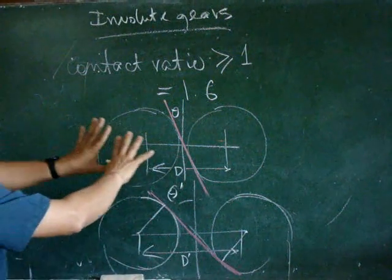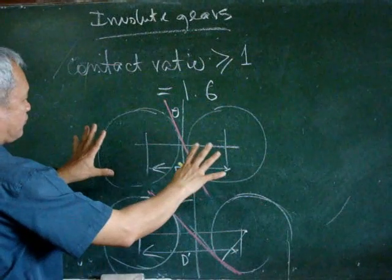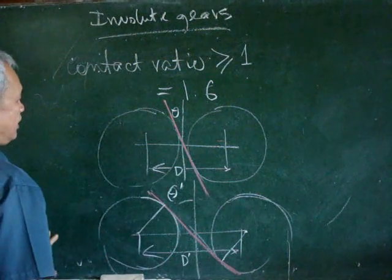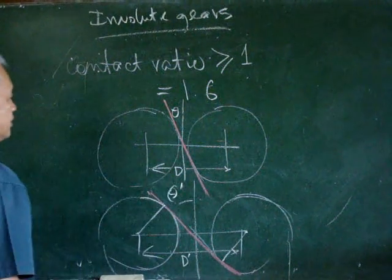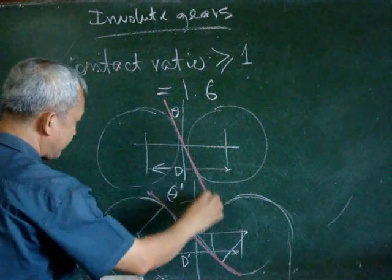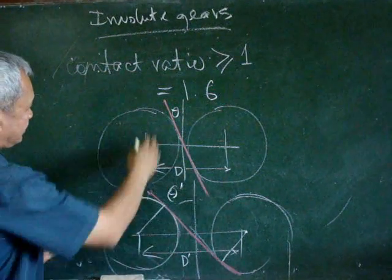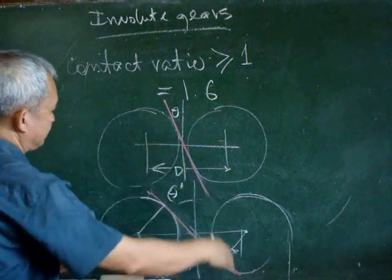Now if we have these two gears in contact, and we have a certain distance D, and we have a certain pressure angle, we have now shown here the line of action.